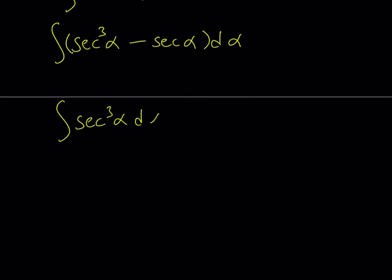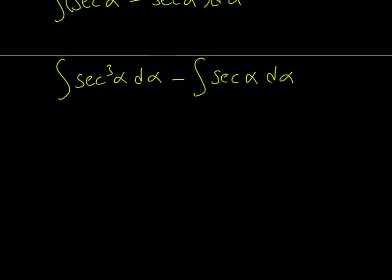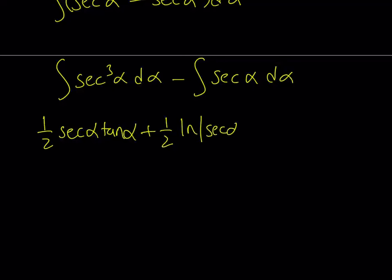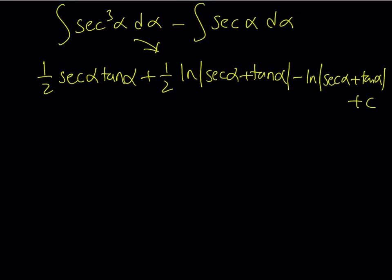The question is how do you integrate secant cubed and how do you integrate secant alpha? I did make a video on powers of secant, so you can go ahead and take a look at that. I'm just going to share the results: the integral of secant cubed alpha is one half secant alpha tangent alpha plus one half ln of the absolute value of secant alpha plus tangent alpha. Then minus the integral of secant alpha, which is ln of the absolute value of secant alpha plus tangent alpha. And at the end we add the constant C.